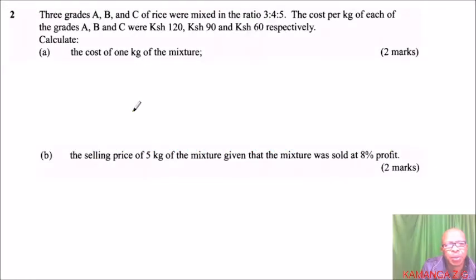This is question number two. Three grades A, B, and C of rice were mixed in the ratio 3:4:5. The cost per kg of each grade A, B, and C were Kenyan shilling 120, Kenyan shilling 90, and Kenyan shilling 60 respectively.